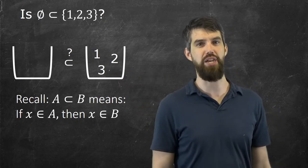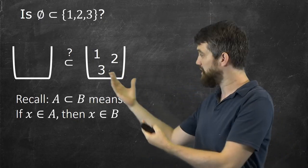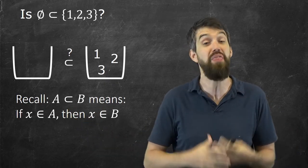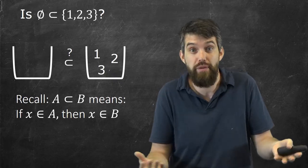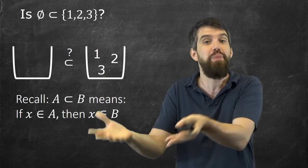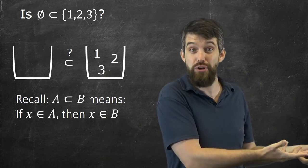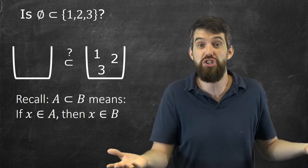Well, I think that applies in this scenario. Anything that happens to be in A, anything that happens to be in the empty set—well, there's nothing to check. So it works for all of them; there's nothing to check. Any of them that happen to be in the empty set is indeed in the set {1, 2, 3}. There was nothing to check.